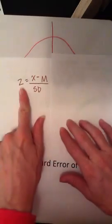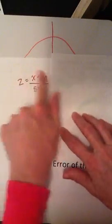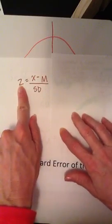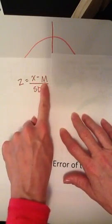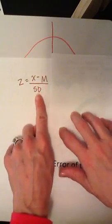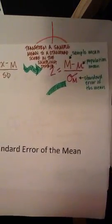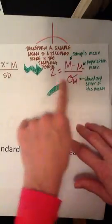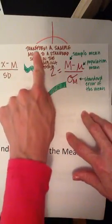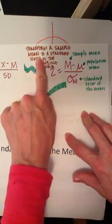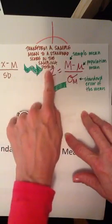Let's go back and recall our formula for the z-score. The z-score is equal to a raw score minus the mean divided by the standard deviation. We're making an analogy between that and this new formula, which can be used to transform a sample mean to a standard score in the sampling distribution.